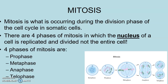So the four phases of mitosis are prophase, metaphase, anaphase, and telophase. Depending on the textbook you look at, sometimes these get divided into extra phases like pro-metaphase, but we're going to keep it simple and go with four phases: prophase, metaphase, anaphase, telophase. The order of those is important to know.